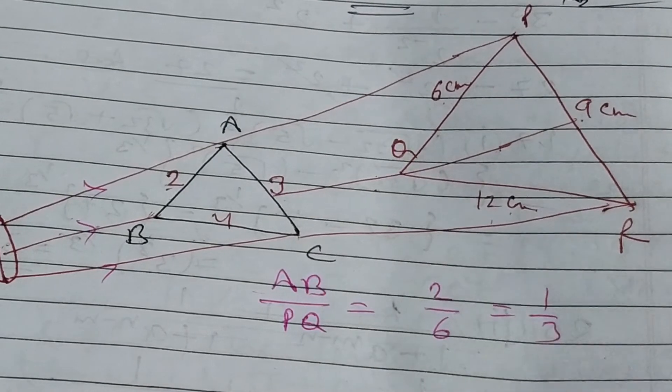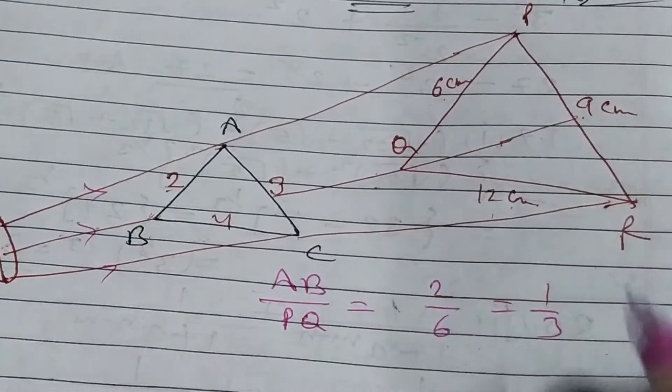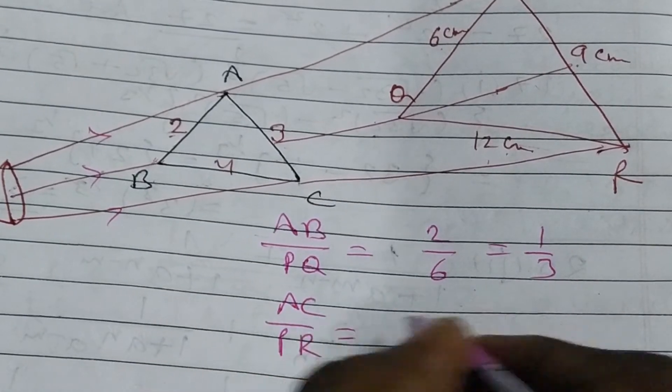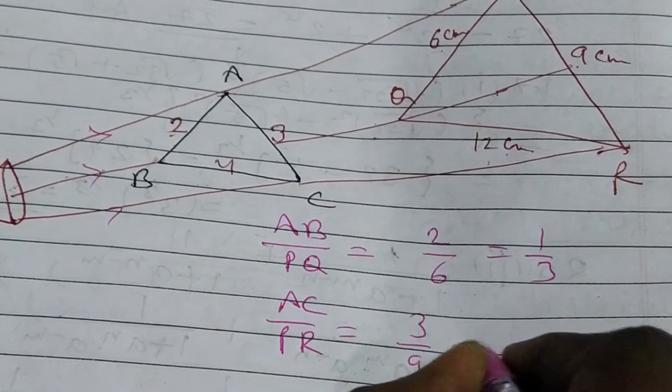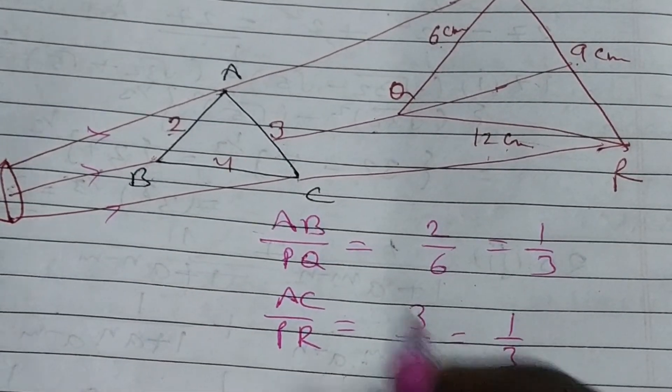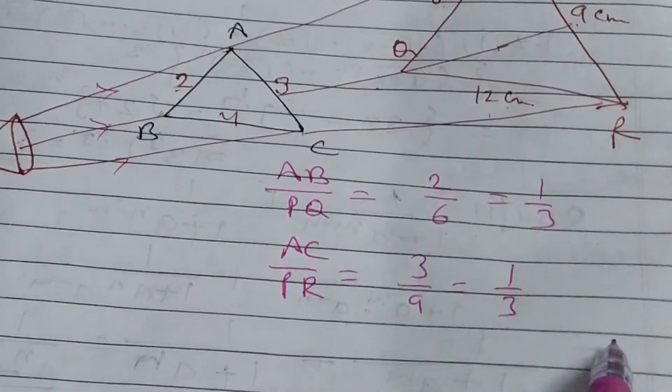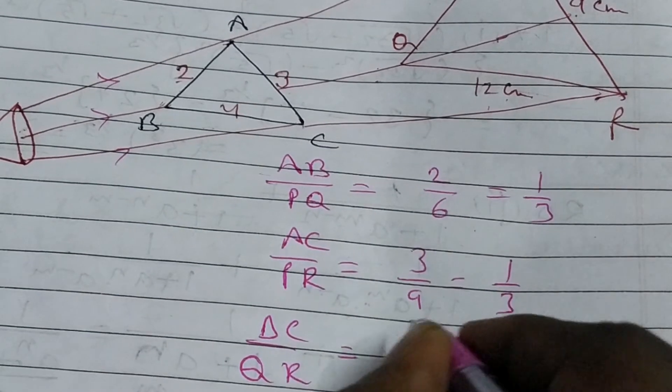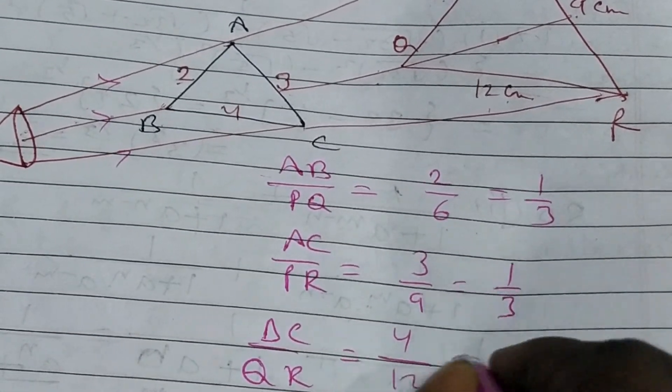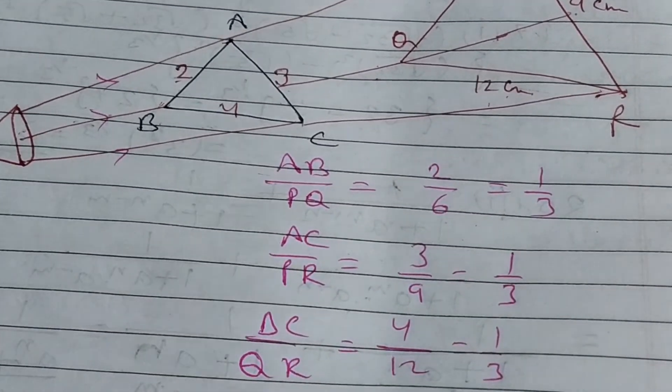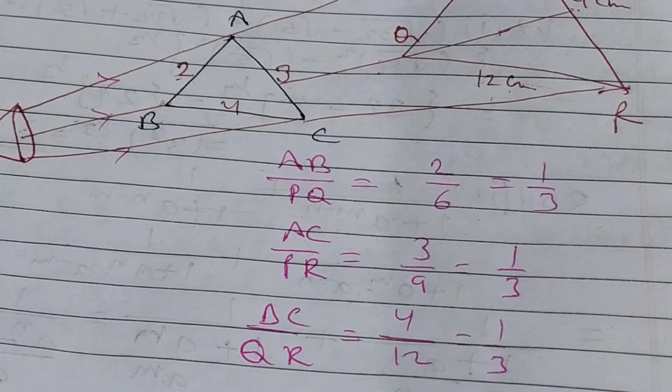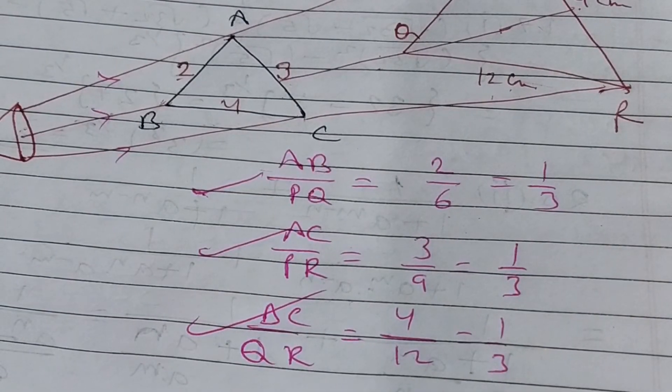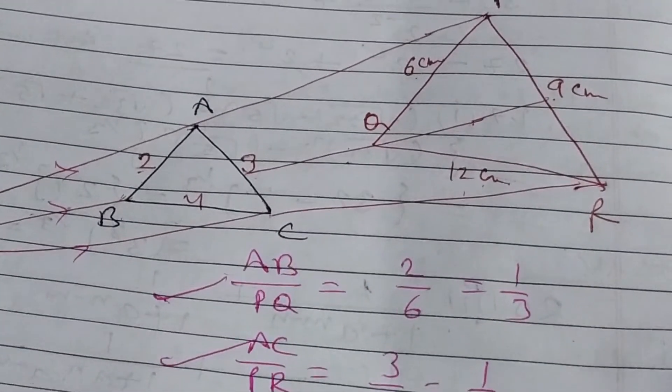For AC and PR, AC upon PR, it is 3 upon 9 or 1 upon 3. And last BC upon QR, you can see that this is 4 upon 12 also 1 upon 3. This obeys the property SSS because the ratio of all three are equal. So, these were the property to prove similarity between triangles.